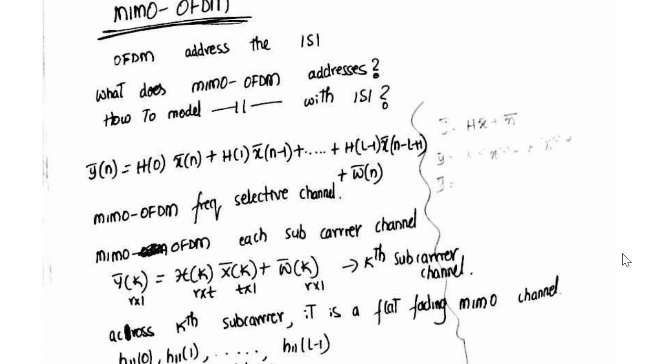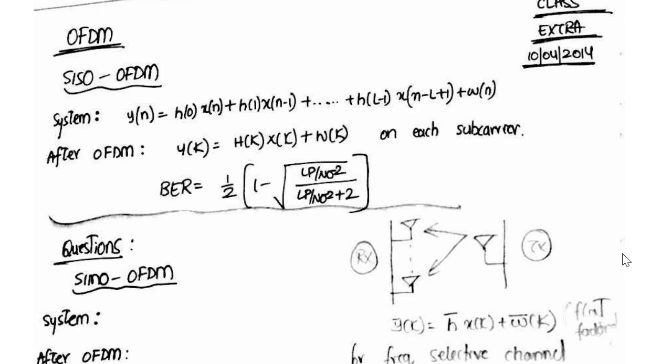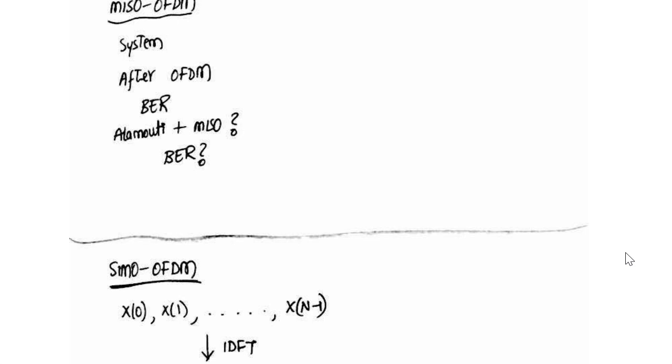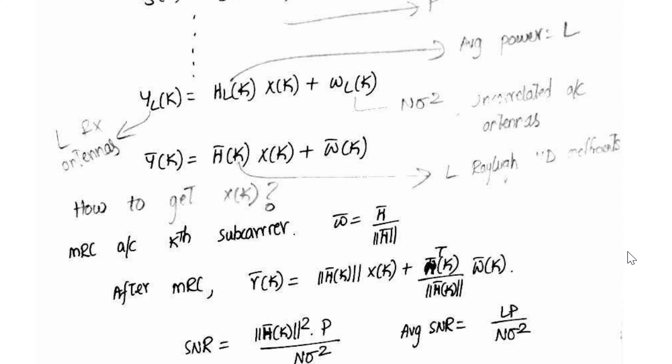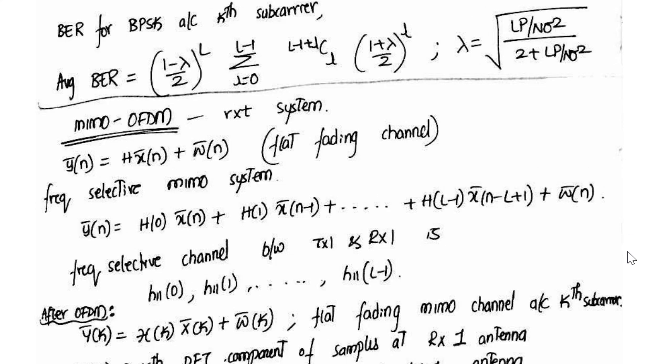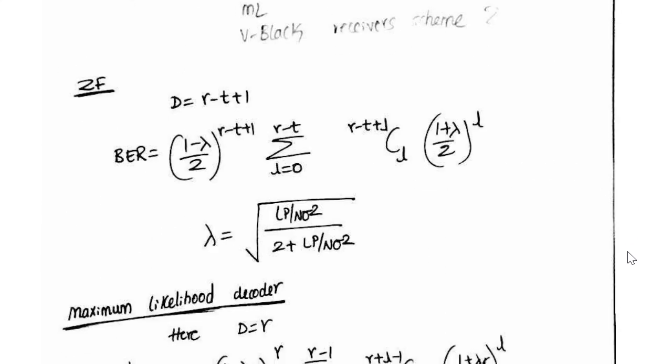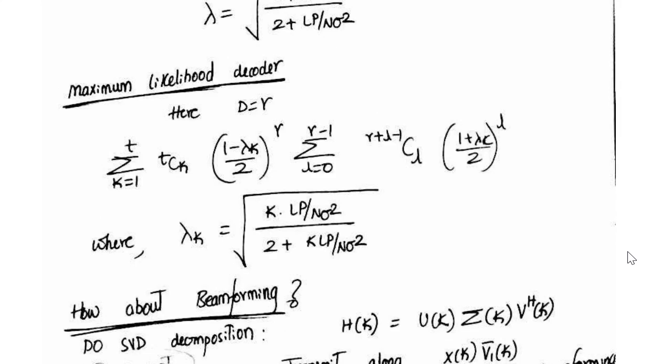Now coming to MIMO OFDM concepts. It is started with SISO OFDM, then SIMO and it goes on. Applying all the zero-forcing receiver or MMSE receiver or maximum likelihood receiver to this OFDM equations and trying to see what is the diversity order, what is the bit rate and things like that.